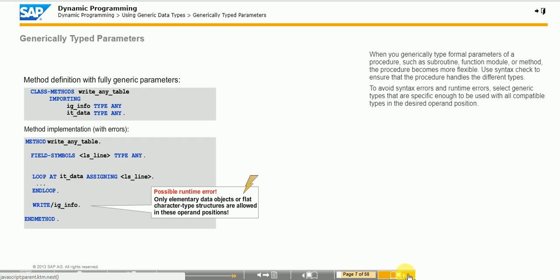The figure shows an example. If you assign an internal table or a structure that is not flat and character type to a parameter, the statement raises an uncatchable exception: OBJECTS_NOT_CHARCONV. The syntax check helps avoid such runtime errors, particularly in operand positions that only allow internal tables, such as SELECT INTO TABLE and LOOP AT TABLE. The syntax only accepts generic table types in these operand positions. Therefore, ensure that an internal table comes after the formal parameter.